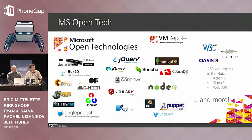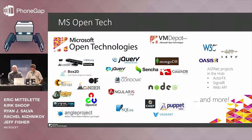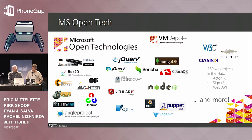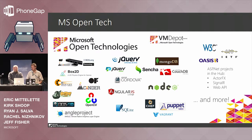MS Open Tech is about a lot of projects — some DevOps, some graphical, HTML5 of course, some standards, and of course today it's about Cordova. We produce a lot of code, we contribute to a lot of open source projects, we use GitHub every day. That's the main mission of MS Open Tech.